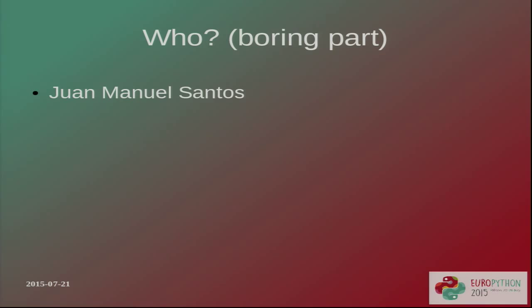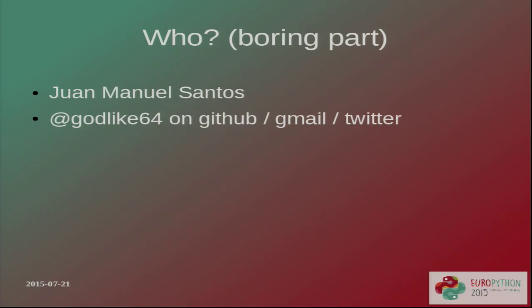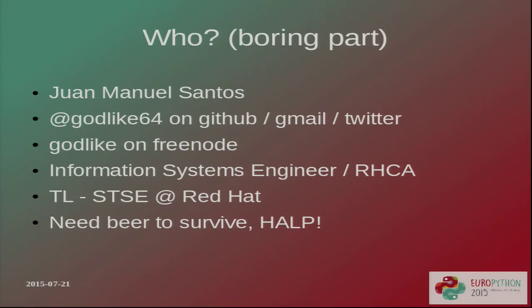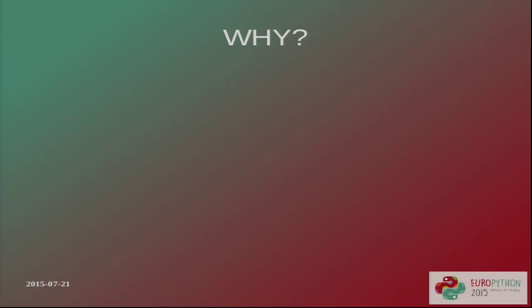So this is the boring part, I'm going to skip this really quickly. My name is Juan Malanzantos. You can find me on Twitter. I'm godlike64 on GitHub, Gmail. If you use IRC, I'm godlike on Freenode. I'm an information system engineer, and just recently I got my Red Hat certified architect degree. I do work at Red Hat as a team leader and senior technical support engineer. I need beer to survive, so if you want to buy me a beer, I'll be really grateful.